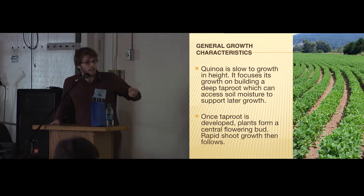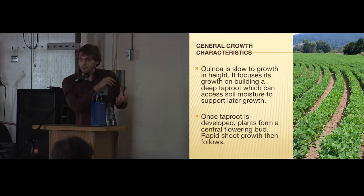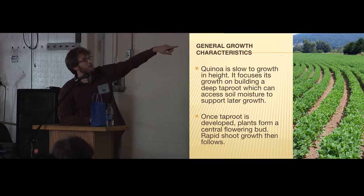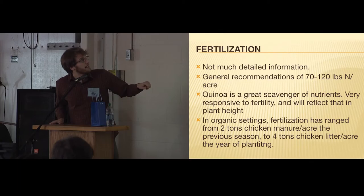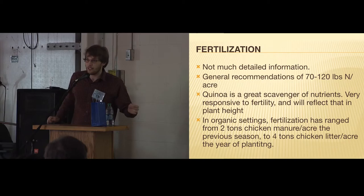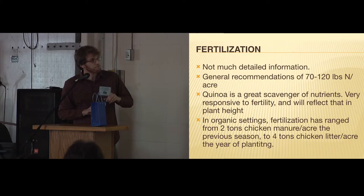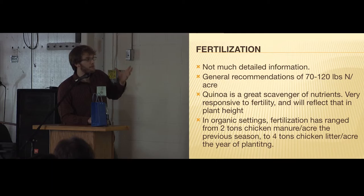As I mentioned, quinoa is slow to grow in height. It stays small. It focuses on building its taproot to get moisture. But as soon as that taproot's developed and it develops a smaller set of leaves, you'll see a flowering plant in the middle of the plant. Then right after that's formed, you have rapid shoot growth. It's quite amazing how quickly it grows up in height. On fertilization, there's not much research that's been done in the U.S. growing in coastal locations. We wanted to get around 70 to 120 pounds of nitrogen per acre. That's what they found in Colorado that worked best. But there haven't been any experiments to get that particular amount down.